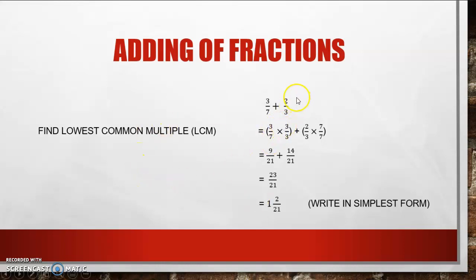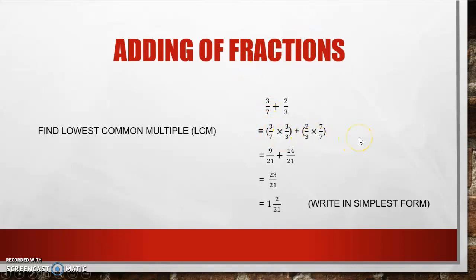For instance, if we have 3/7 plus 2/3, now 3 is not a factor of 7 and neither is 7 a multiple of 3. Remember we did factors and multiples in term 1 and this is why you did it, because it is important with fractions. So now I have to find the lowest common multiple that they share, and obviously it is 21.